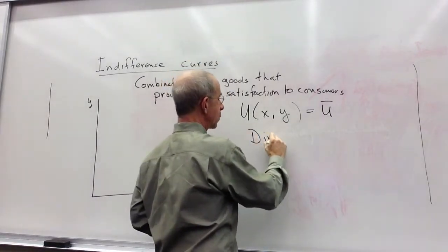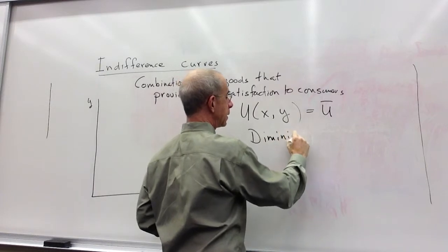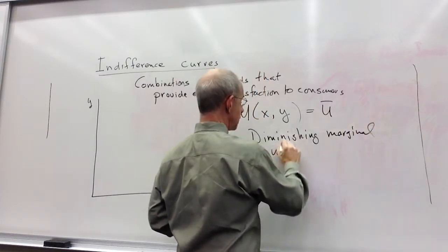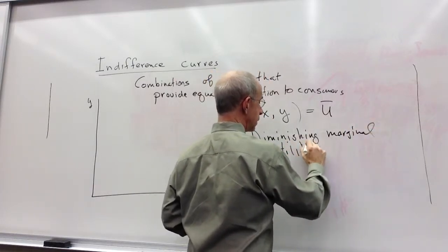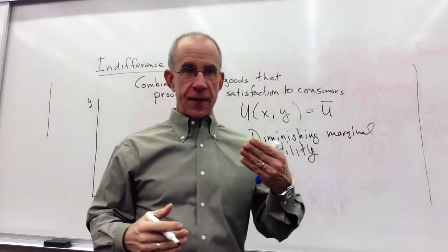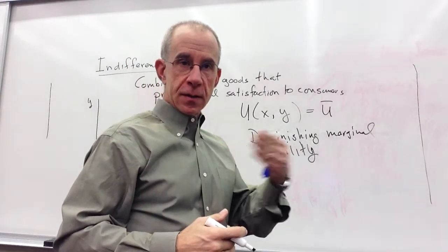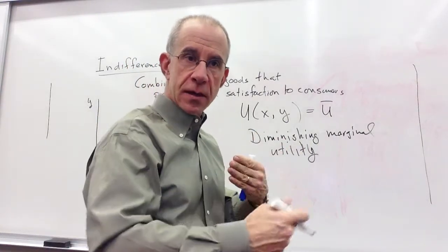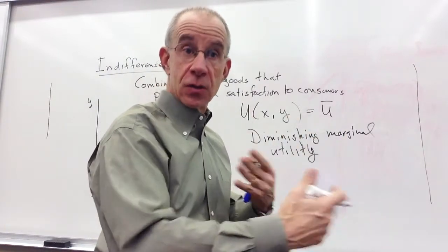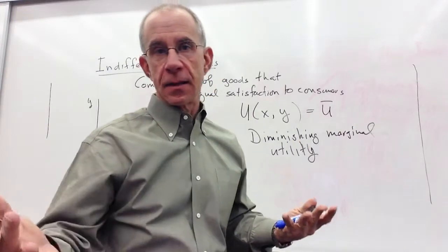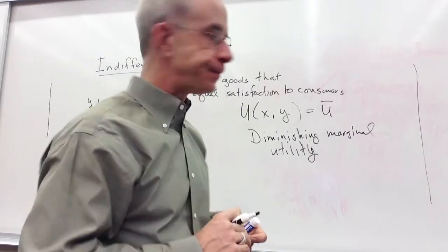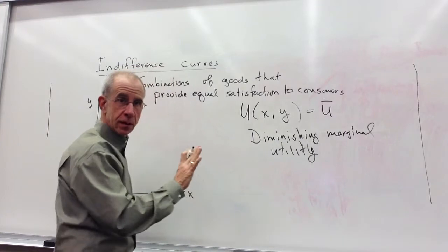An important concept we're going to see is diminishing marginal utility, which is another way of saying that if I hold the consumption of everything else equal and increase consumption of just one good, the extra satisfaction I get is going to diminish. This is like diminishing marginal productivity on the production side.